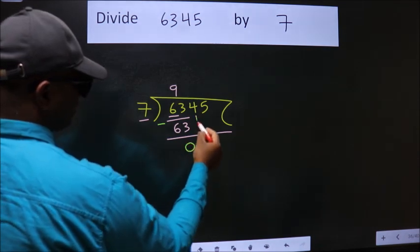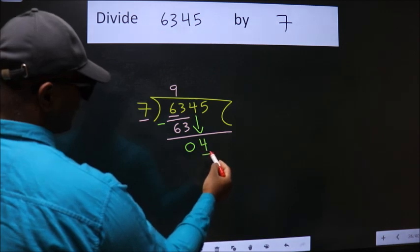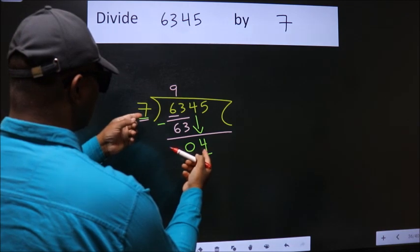After this, bring down the beside number. So 4 down. Here we have 4. Here 7. 4 is smaller than 7.